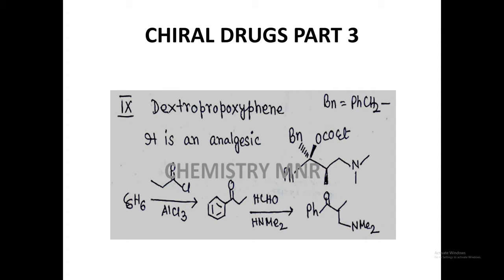Welcome to the last part of the unit on chiral drugs. Let us consider dextropropoxyphene, an analgesic drug — a painkiller. This is the structure of the compound where a phenyl group is attached with one chiral center. The chiral center contains a benzyl group (PhCH2). That chiral center is also attached with the OCOET ester group. The next carbon is also chiral, then CH2NMe2.